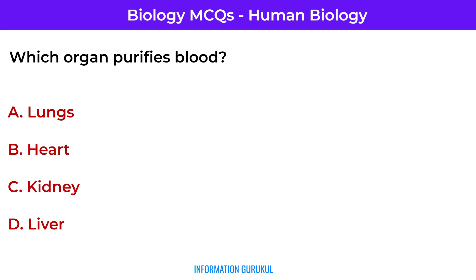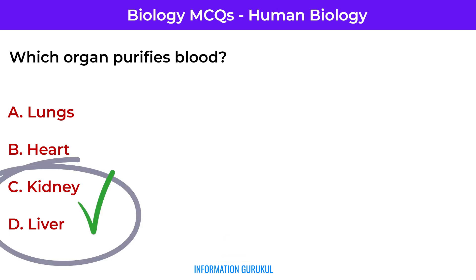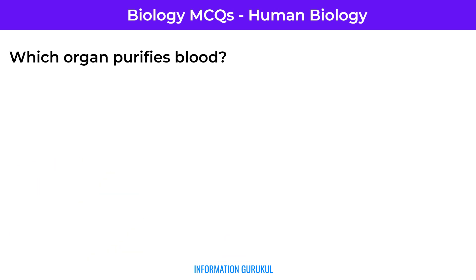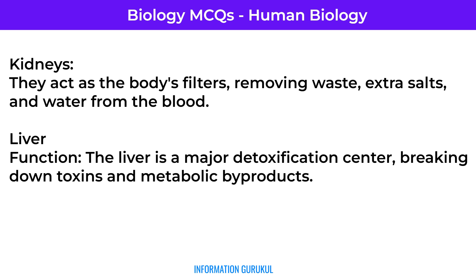Which organ purifies blood? Kidney and liver. Kidneys act as the body's filters, removing waste, extra salts, and water from the blood.